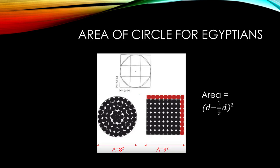So in the example, the diameter is equal to 9, which means that the area is equal to 8 squared. That's for the circle.